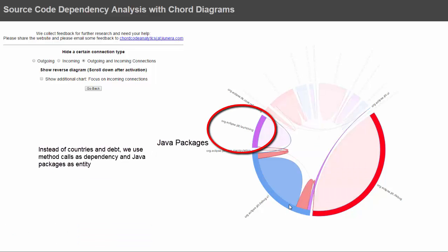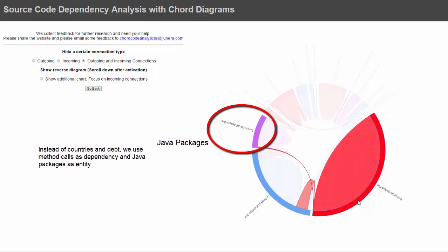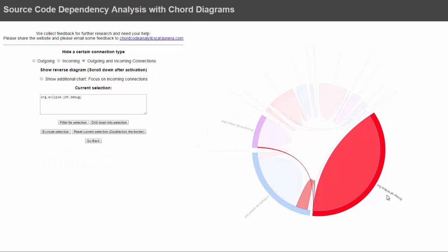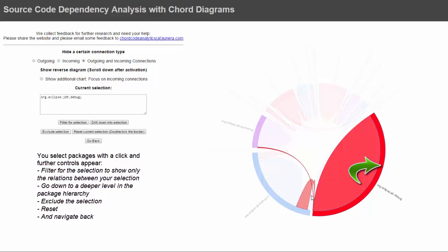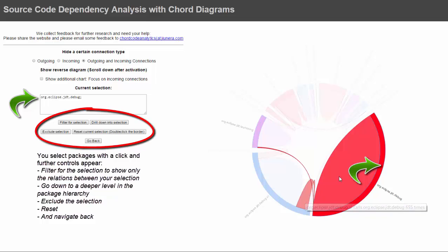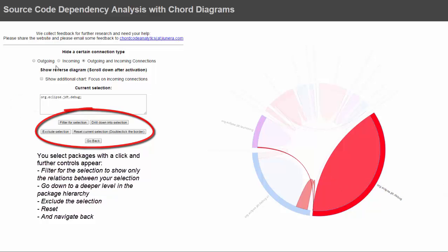Here we don't use countries, we use Java packages and the amount of method calls. You can see the packages are aligned at the border and the connections are the method calls. Once you select a package by clicking the outer border, it gets added to the current selection, highlighted with a green arrow, and then you get a new set of controls to drill down or filter for the current selection.